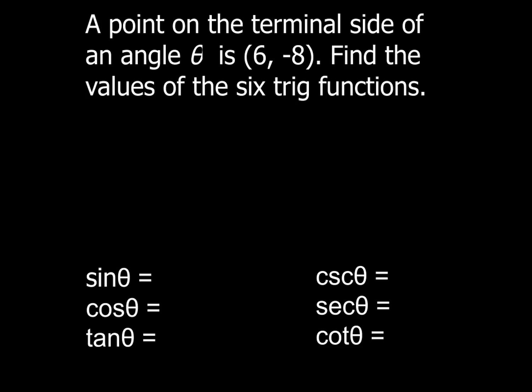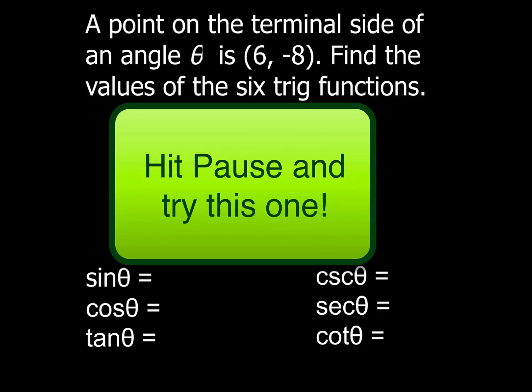So what I want you to do for this one, go ahead and practice this. I want you to find all 6 trig values for the point (6, -8). Draw your picture, find the missing side, and then find the values of the 6 trig functions. When you think you're done, come on back and let's see how you did. Hit pause, and go ahead and try this one on your own.